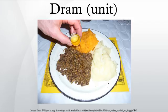A teaspoonful has been considered equal to one fluid dram for medical prescriptions. However, by 1876 the teaspoon had grown considerably larger than it was previously, measuring 80 to 85 minims. As there are 60 minims in a fluid dram, using this equivalent for the dosage of medicine was no longer suitable.